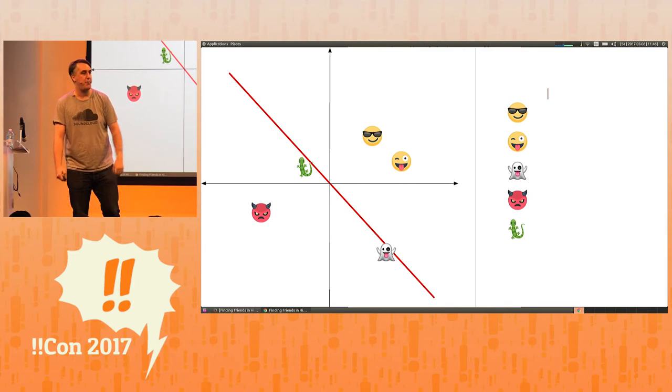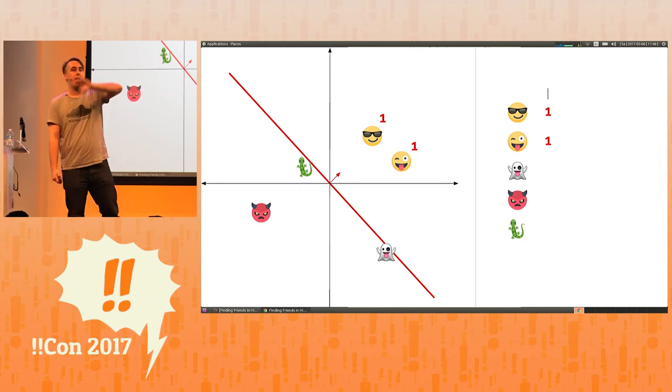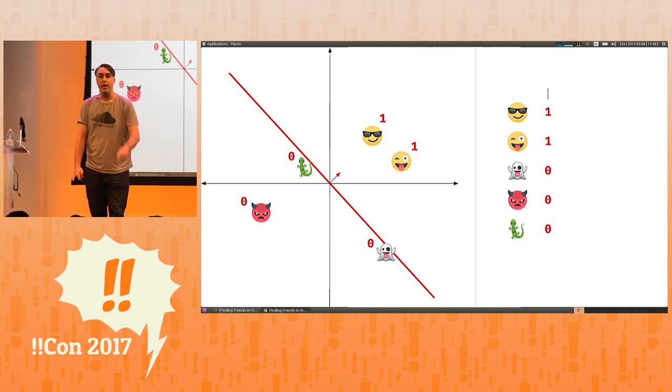Pick a random plane that passes through the origin. Then pick an orientation and assign vectors on one side of the plane a one and vectors on the other side of the plane a zero. And don't stop.